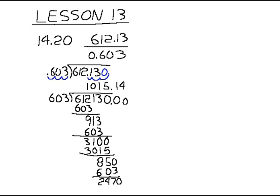Running out of room, so continuing the math above: 2470 minus 2400 equals 70. Carry another zero down — 603 goes into 700 one time. That's our third decimal digit. Since we need to round to two decimal places, our answer is 1015.14.